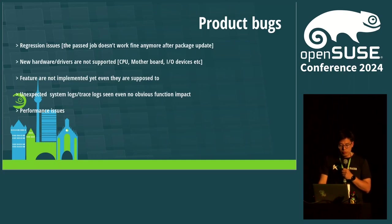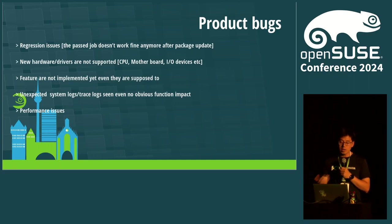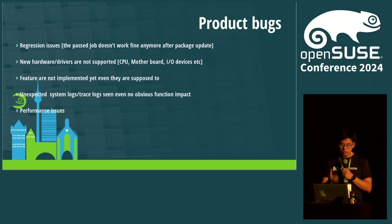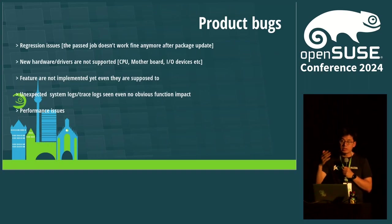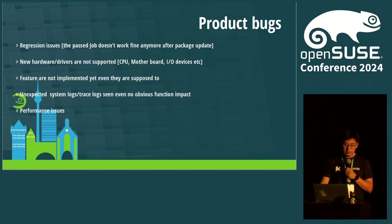Sometimes we should have some new failures. For example, if we have some new hardware introduced, it should have some new CPU models, or new graphic card, or even some new storage devices. But our kernel cannot support this new device, so it should be fixed from our product side.